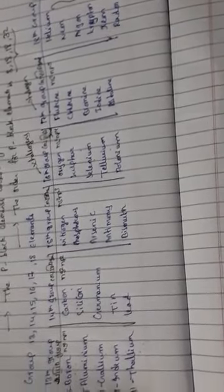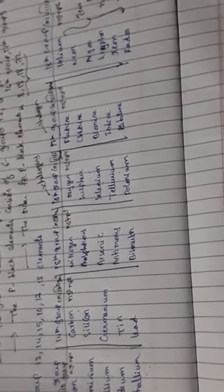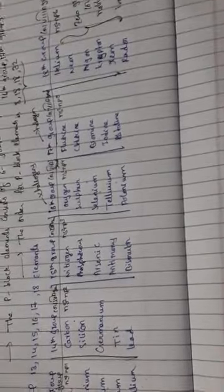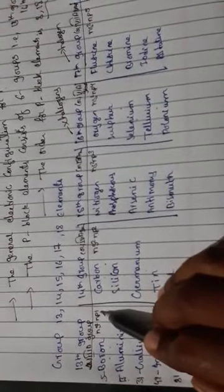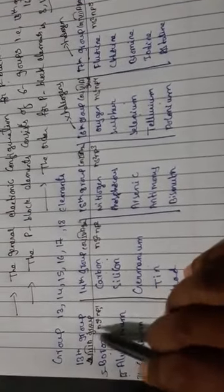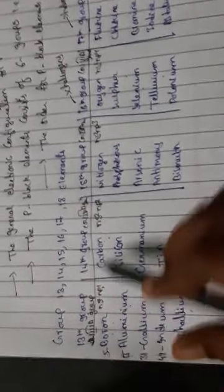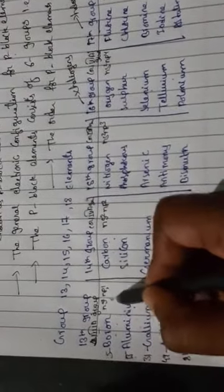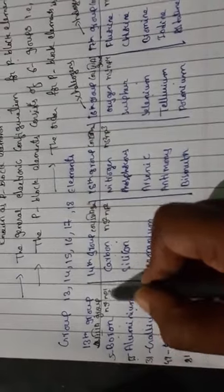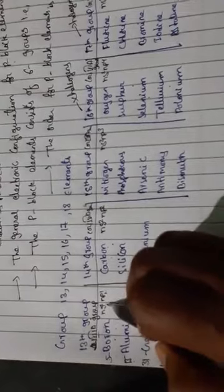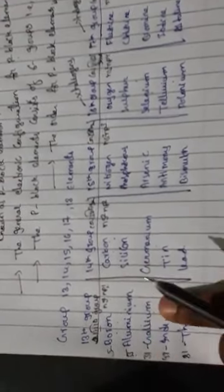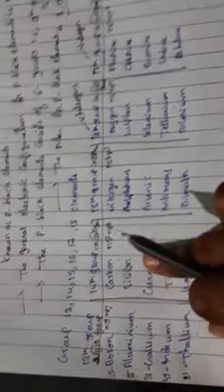So the P-block elements include groups 13, 14, 15, 16, 17, and 18. Observing the valency: for the 13th group (3A), the configuration is ns² np¹, giving valency 3. So the group number equals the valency for these elements.